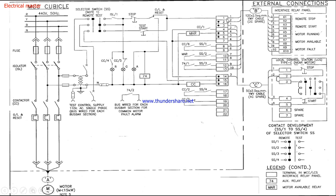From this terminal block, the control supply goes to connect the external panels. This external panel is called the IRP panel — Interface Relay Panel. From this panel there are terminal connections.